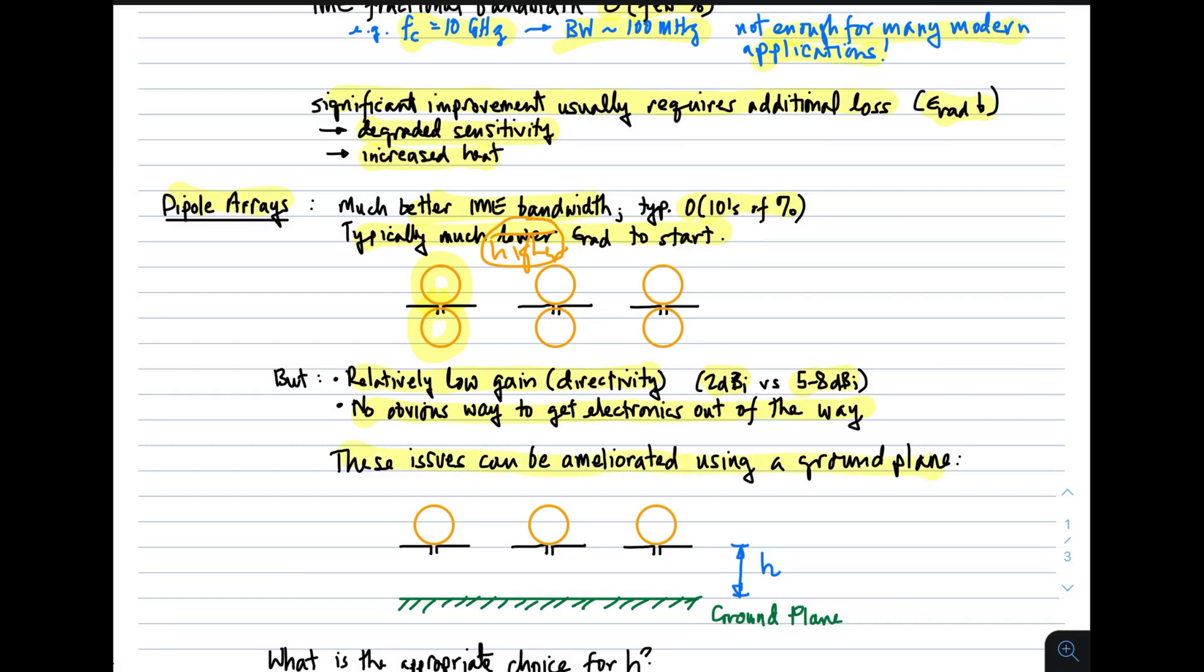So the idea is, you take that same array of dipoles, and you put it some distance above a ground plane. That distance we're calling h. Now you can see right away that this is going to help for two reasons. One is, it gives you now a place to put the electronics. The electronics can go down here and not interfere with the array, just as they do in the patch array.